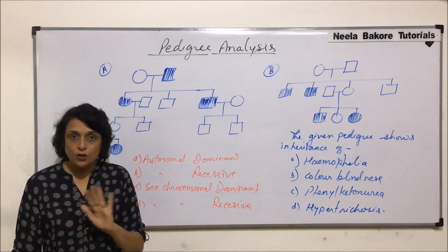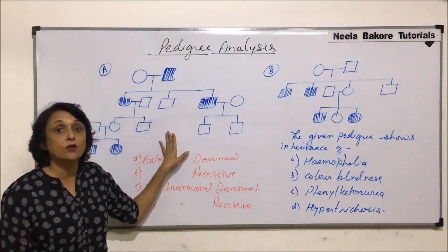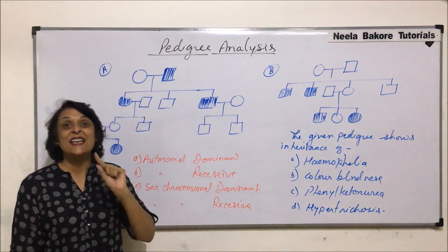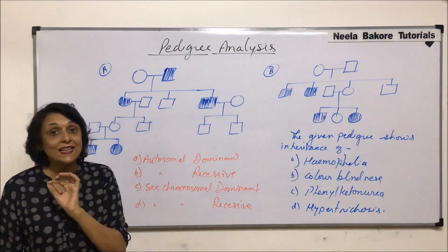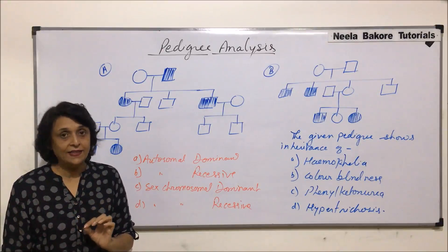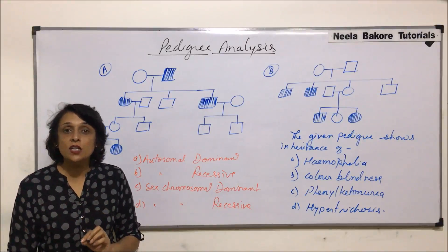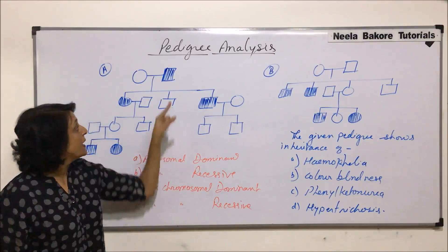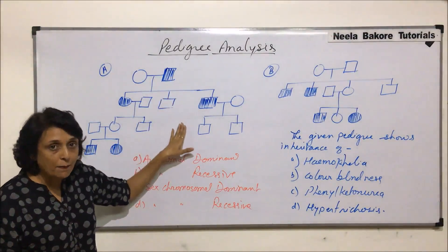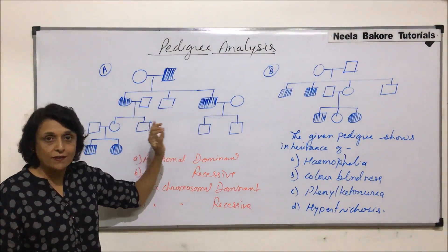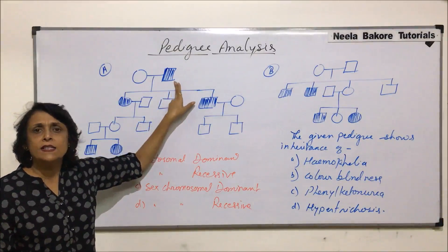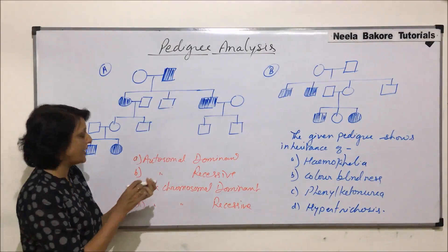Since the disease is not shown in all generations, this is not a dominant disorder. Now let us check whether it is sex-linked. If the gene is on the X chromosome and the father has the disease, then the disease gene is on the father's X chromosome, and the Y chromosome carries no gene for that trait.